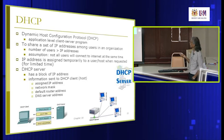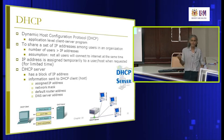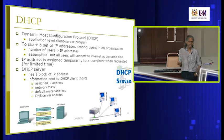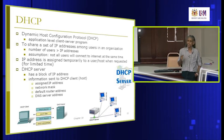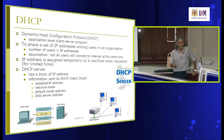The DHCP server shares a set of IP addresses among users. You can have more users than IP addresses — for example 64 addresses for 80 machines — because not everyone will connect at the same time. The server assigns IP addresses temporarily for only a few hours. After that, the address expires and must be renewed. If the user switches off, the IP is released and can be reassigned to someone else.